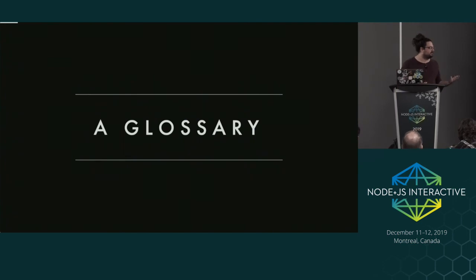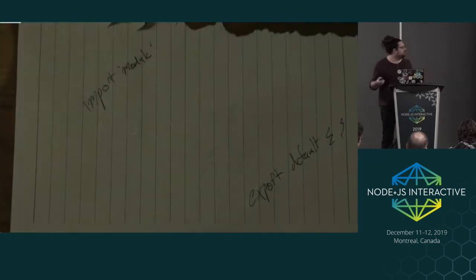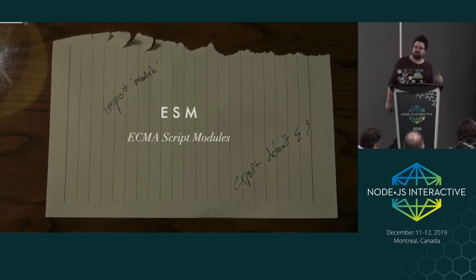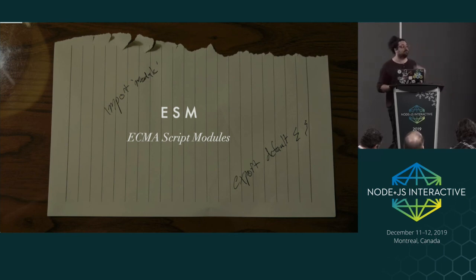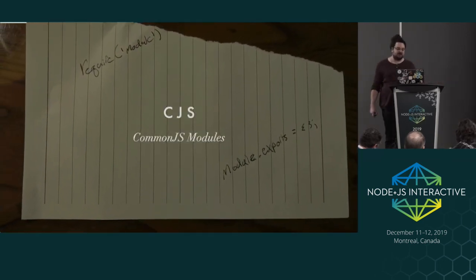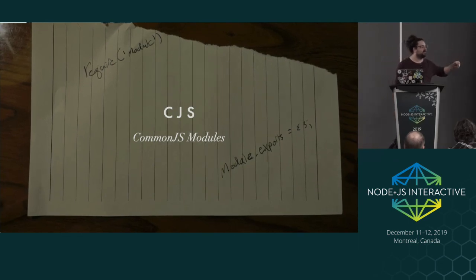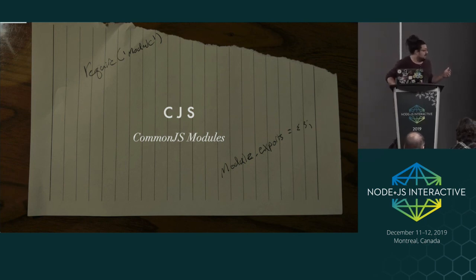Before we get started, I've begun doing a bit of a glossary in some talks. The topic of ECMAScript modules has a whole bunch of buzzwords, and a handful are made up, like most words. The first one is ESM, short for ECMAScript modules - ECMA being the European Computer Manufacturers Association, where the JavaScript language is specified. At the top we have an import, at the bottom an export. This is different from CJS, also known as CommonJS, where you require a module and call module.exports to export what will be imported by someone else.